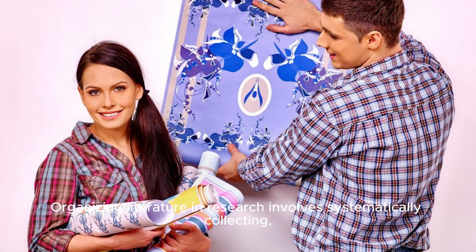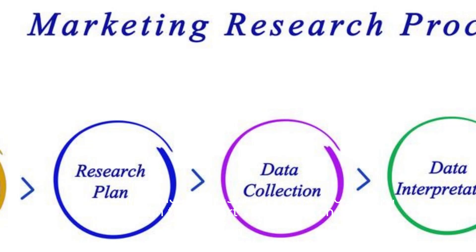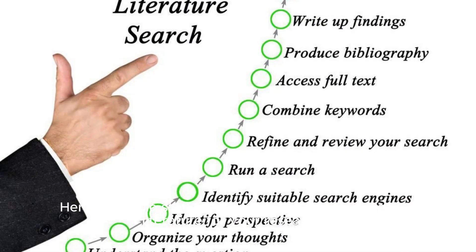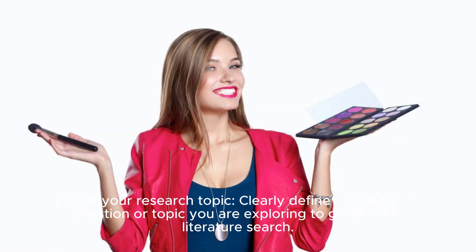Organizing literature in research involves systematically collecting, evaluating, and synthesizing relevant sources of information to support your research project. Here are some steps to help you effectively organize literature. Step 1: Define your research topic — clearly define the research question or topic you are exploring to guide your literature search.